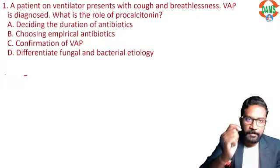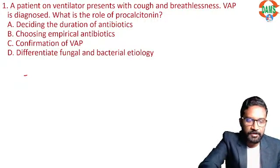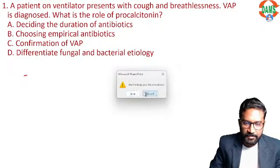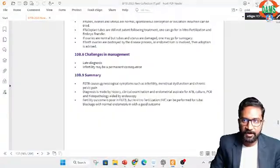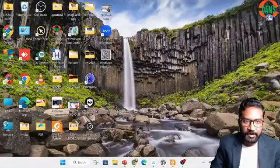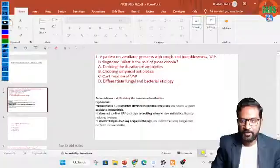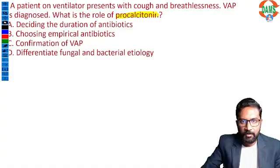So the first question is: a patient is on a ventilator, he presents with cough and shortness of breath, and they have mentioned that you have started antibiotics and they are asking which parameter is utilized and how. So this is procalcitonin — the question was regarding procalcitonin.